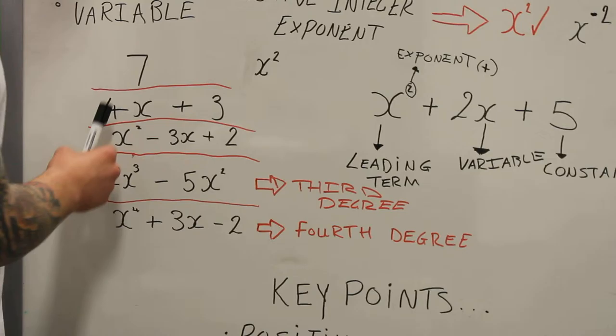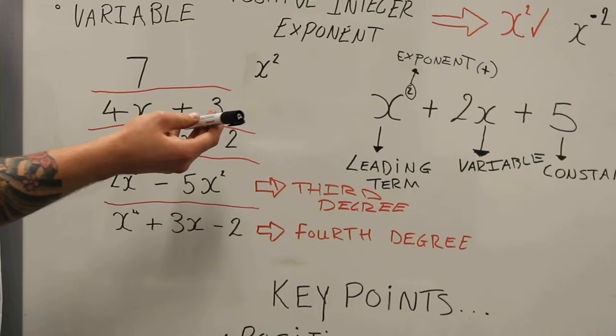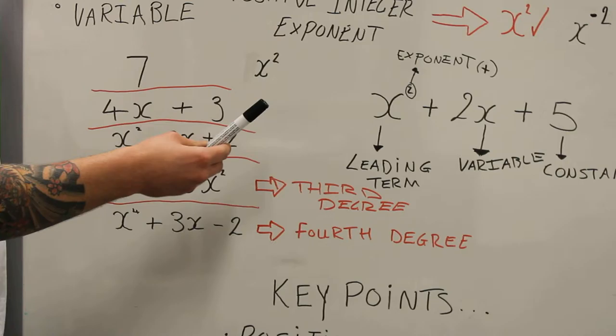We have 2x to the power of 3 minus 5x squared. This is a cubic equation. We have x to the power of 4 plus 3 minus 2. This is a quartic equation.